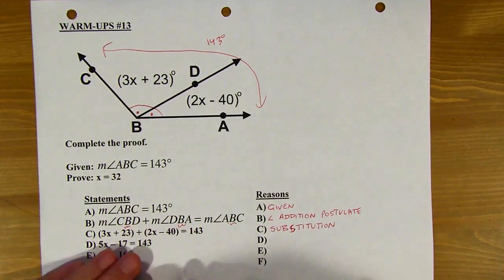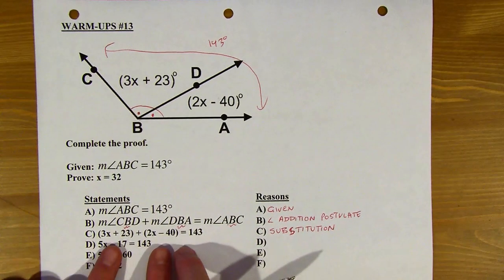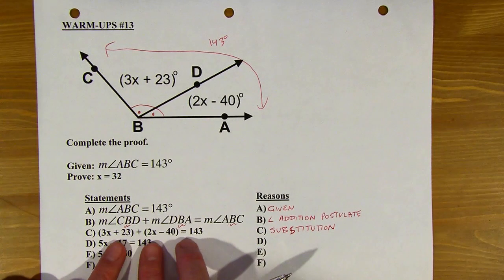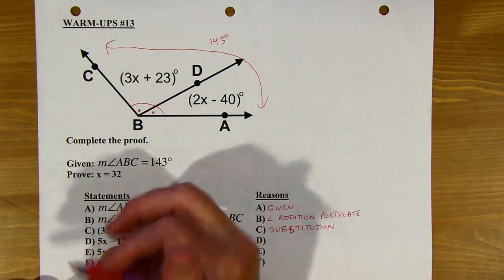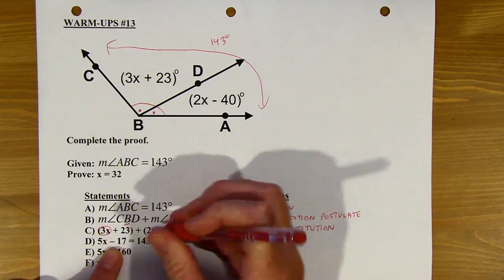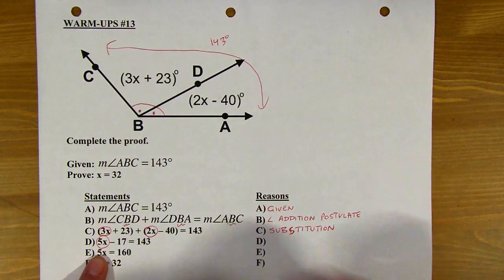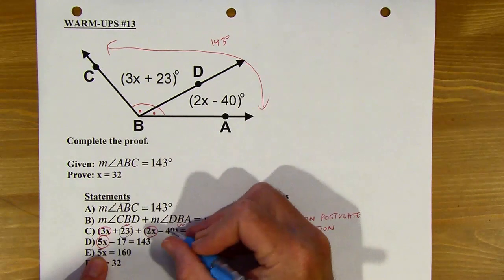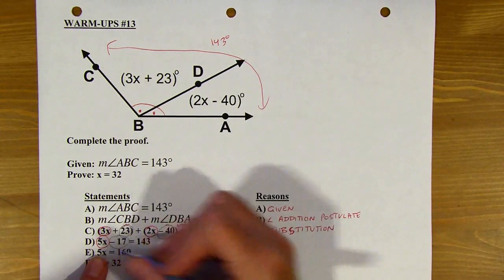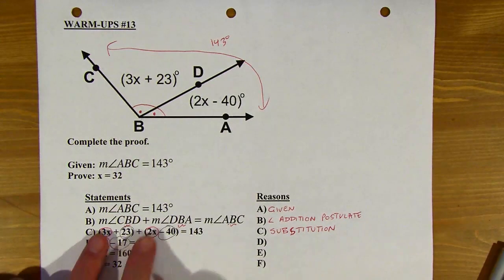Okay. And next up, now it's all algebraic from here. So we actually don't need the diagram anymore. You can just think, how are you going from this equation to this equation? Well, if you take the 3x and the 2x and combine them, that would give you 5x, right? And then if you take 23 and negative 40, those would combine to negative 17. So we're combining like terms, okay?